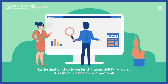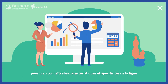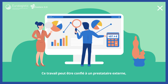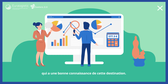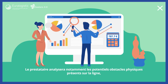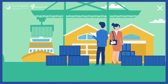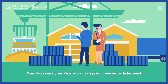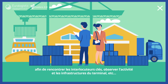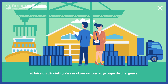La destination choisie par les chargeurs doit faire l'objet d'un travail de recherche approfondie pour bien connaître les caractéristiques et spécificités de la ligne avant de se lancer dans toute démarche concrète. Ce travail peut être confié à un prestataire externe ayant une bonne connaissance de cette destination. Le prestataire analysera notamment les potentiels obstacles physiques présents sur la ligne et déterminera un coût par unité de transport en fonction du taux de remplissage du train. Une visite du terminal est prévue pour rencontrer les interlocuteurs clés et observer l'activité et les infrastructures. Le neutral body peut se charger de cette visite et faire un débriefing au groupe de chargeurs.